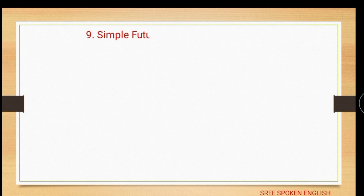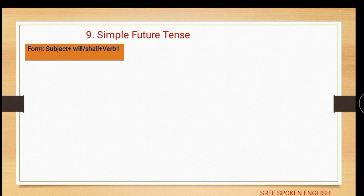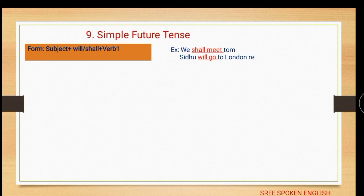Next, the last category: simple future tense. The form is: subject + will/shall + verb base form + object. Example: 'We shall meet tomorrow.'